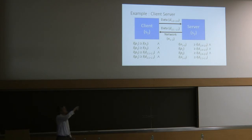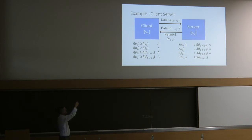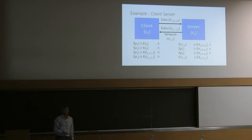For the client-server example, you get the same inequalities as before for the producer-consumer, plus additional ones for the result data coming back from the server to the client. For the data D_2-1, you get inequalities saying the level of platform 2 must be greater than or equal to that data, the level of platform 1 must also be greater than or equal to that data (because the data arrives at platform 1), and the network between platform 2 and platform 1 must be greater than or equal to that data.